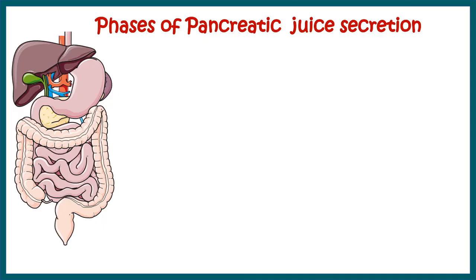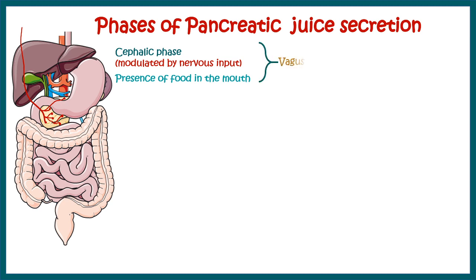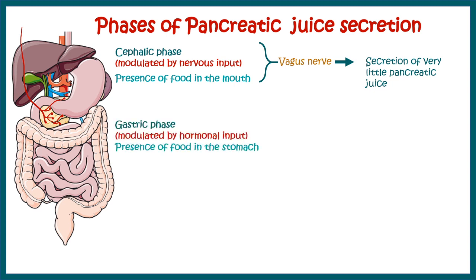Now let's talk about the phases of pancreatic juice secretion. The first phase is the cephalic phase, which is modulated by the vagus nerve. There is vagus nerve innervation in the stomach and the pancreas. Whenever there is food in the mouth or a smell, that stimulates the vagus nerve, which releases its content on the stomach and pancreas. As a result, the pancreas secretes some pancreatic juice and tells the intestine to get prepared for what is coming down from the stomach.